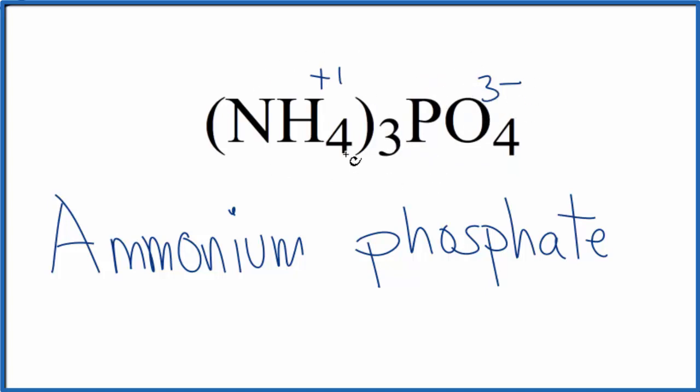This is an interesting case where we have two polyatomic ions. They're bonded together in an ionic bond because they're ions. So the name for ammonium phosphate, NH43PO4.